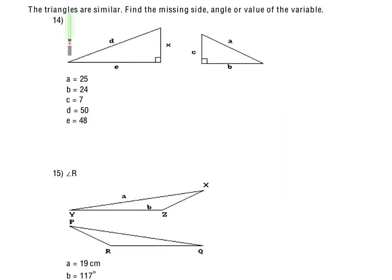For 14 and 15 it's really the same directions, the triangles are similar, find the missing side angle or value of the variable. So here we want to find x. Now they give us all these values. I would recommend probably writing these in, so the 25, the 24, the 7, they give me D is 50 and E is 48. Now this one is a pretty simple relationship, you might notice right away that the 50 is twice as much as 25 and 48 is twice as much as 24. However, I would like you to be able to set these up when they're not that nice, so I would recommend setting this up.